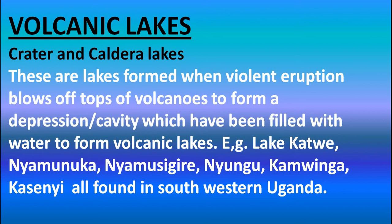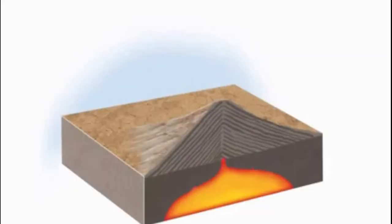Next, volcanic lakes — we have crater and caldera lakes. Crater lakes are formed when violent eruptions blow off the top of the volcano to form a depression or cavity, which is then filled with water to form a volcanic lake. A caldera is where we see an enlargement of the crater, which later fills with water to form a lake. So these are formed due to volcanicity.